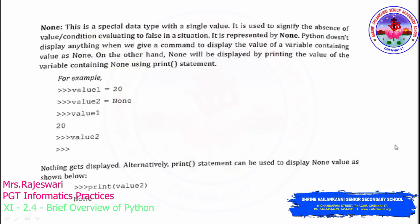The next data type is None. None is a special data type that defines a null or no value. When you don't want to specify any value or condition, you use this None data type. None can be assigned to any variable. For example, value1 = 20 and value2 = None. When you retrieve value2, it will not display anything or will display 'None'.